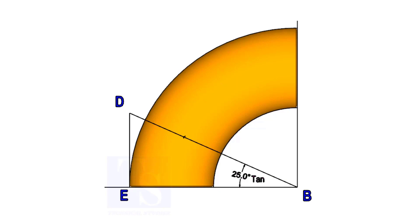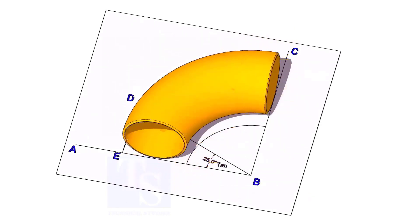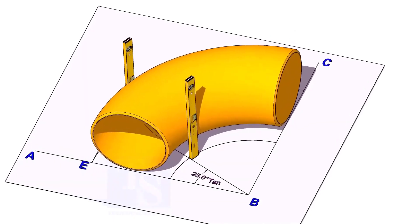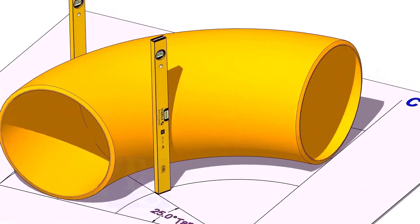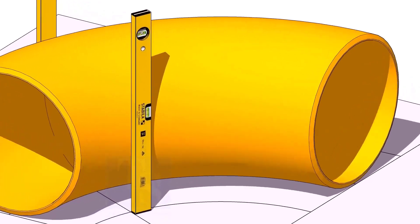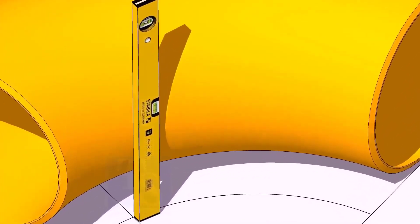Now, put the elbow exactly on the layout as shown. Hold two large level bottles at the edge of the elbow on both sides vertically, and strike a mark where the level bottle edge touches the elbow.